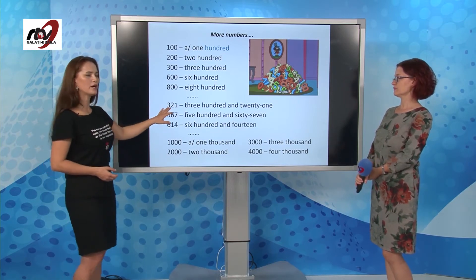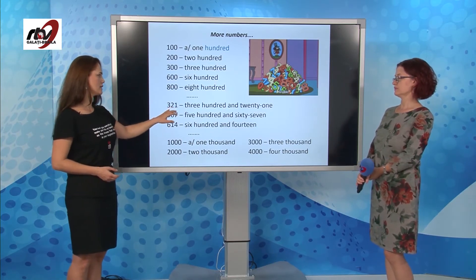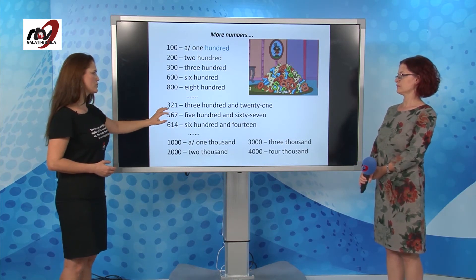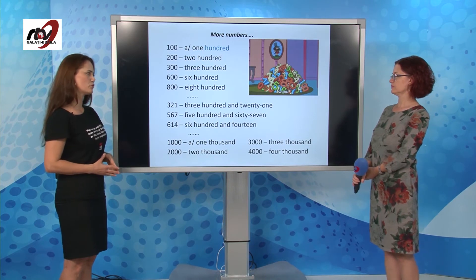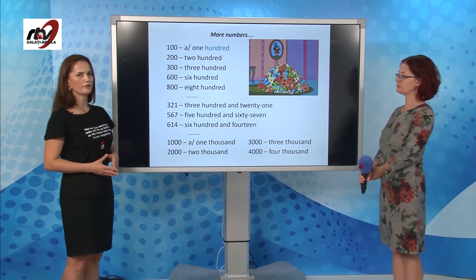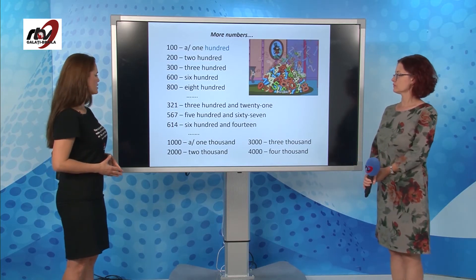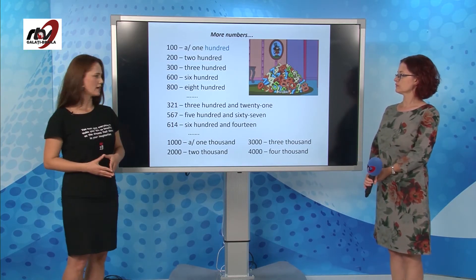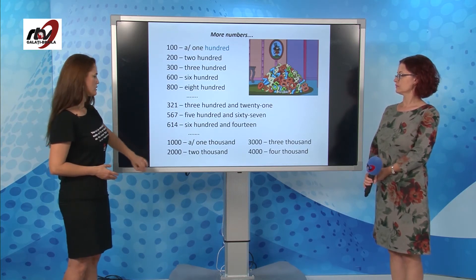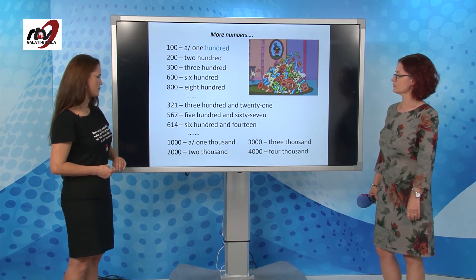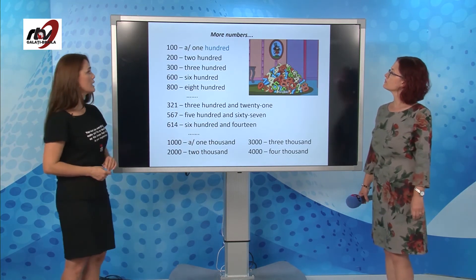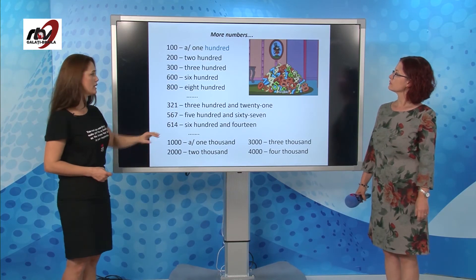If we add the tens to the hundreds, the numbers might sound like this. Trei sute douăzeci și unu: three hundred and twenty-one. Cinci sute șaizeci și șapte: five hundred and sixty-seven. Six hundred and forty. O mie: one thousand, two thousand, three thousand, four thousand. But this is only if you want to test your limits.